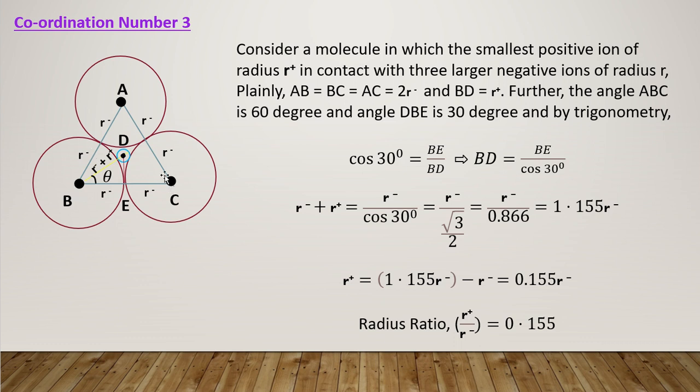BC and AC also connect with equal sides — this is an equilateral triangle with sides 2R−. The positive ion (cation) has radius R+. By trigonometry, the angle at each corner of an equilateral triangle is 60 degrees. Angle DBE is half of angle ABC, so angle DBE equals 30 degrees.